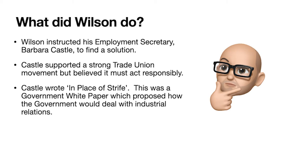Castle feels that the unions need to act responsibly, and so in 1969 Barbara Castle writes a government white paper called 'In Place of Strife' — a proposal as to how the government will deal with industrial relations. It's important to understand a government white paper isn't law; it is a set of ideas. It is the government going out to the wider population, to key groups — in this case industry and unions — and saying, 'This is what we suggest should be the way forward. What are your views?' So it gives a starting point.